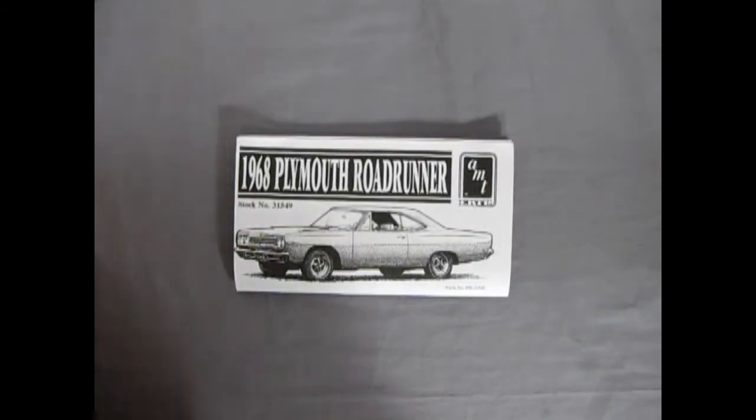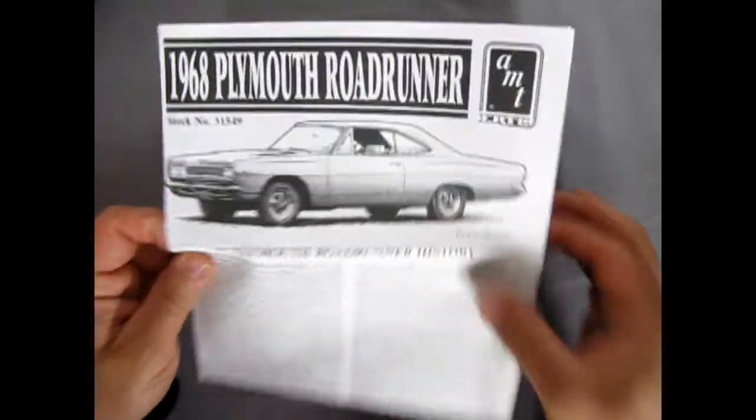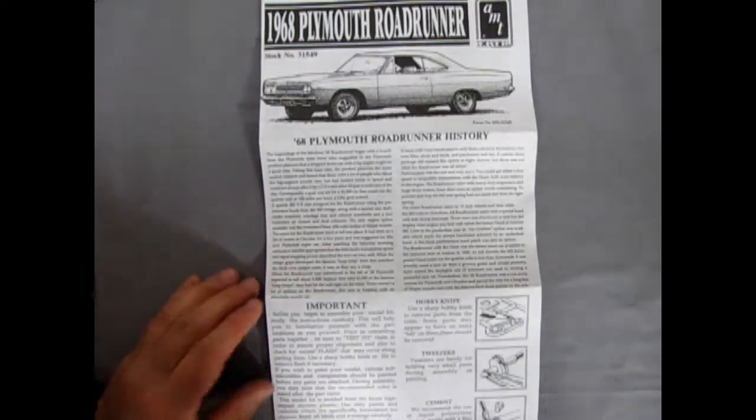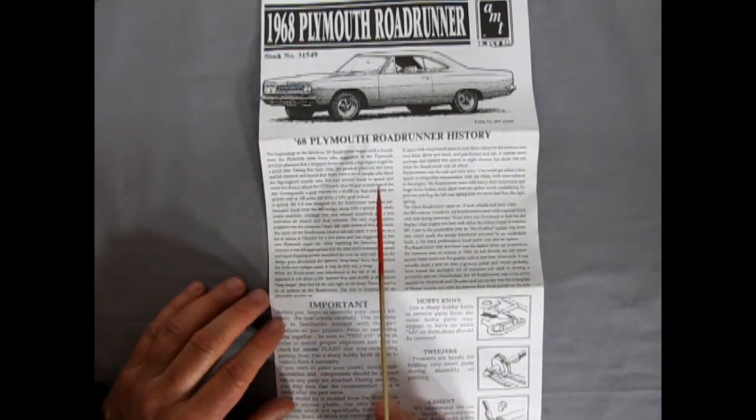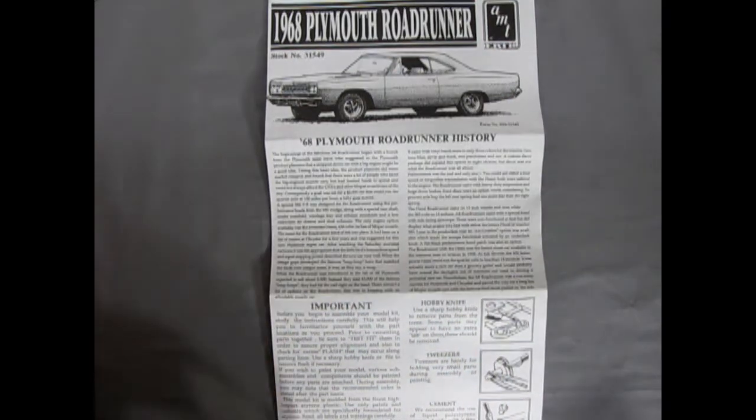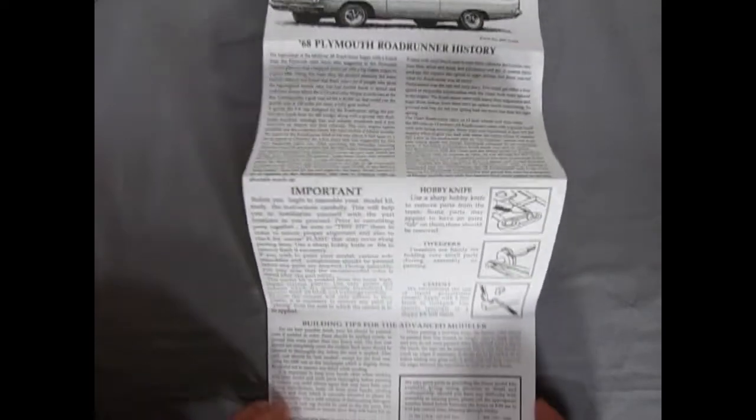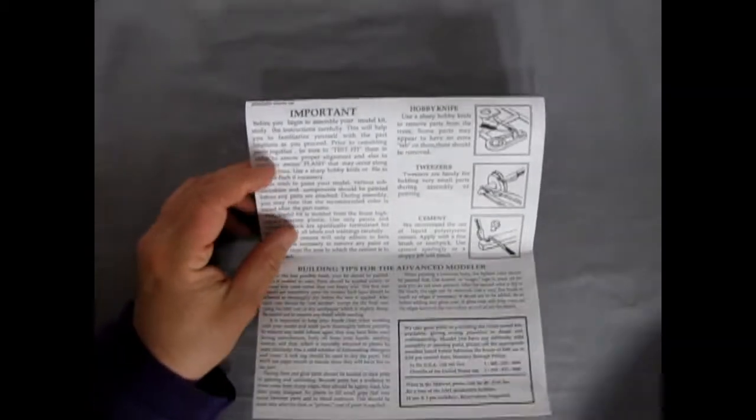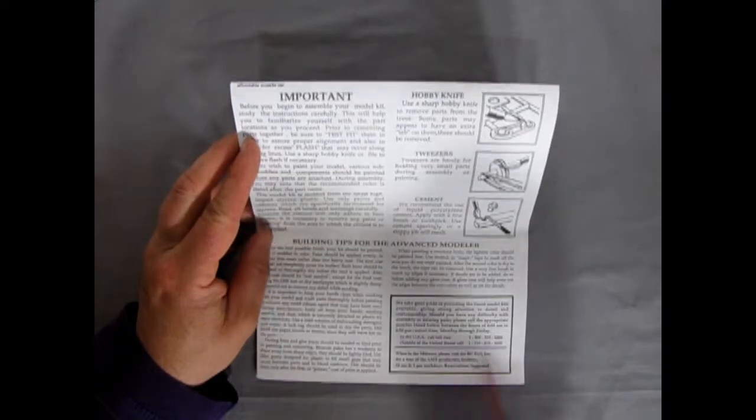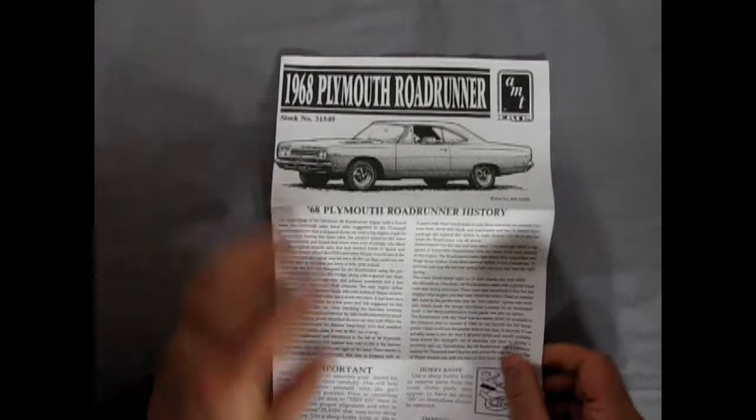Here we have our 1968 Plymouth Roadrunner instructions which actually fold out into a very big instruction sheet. I believe the original issue of this kit was in the late 1990s. There's the write-up and the history of our Plymouth Roadrunner which is quite a big history. Then we have our important instructions using your knives and everything and a phone number which I don't think exists anymore for this kit considering this is pretty old now.